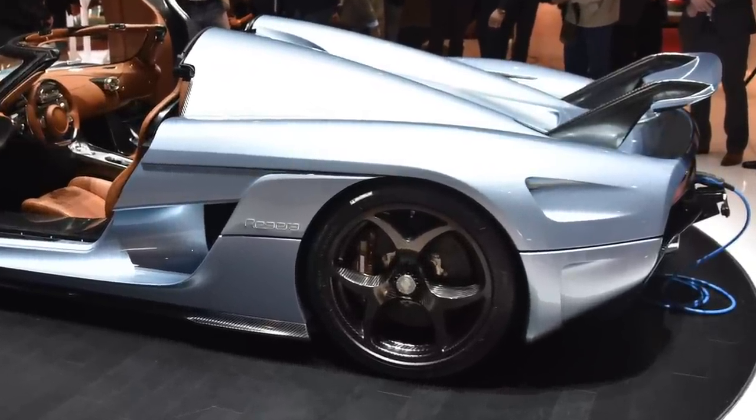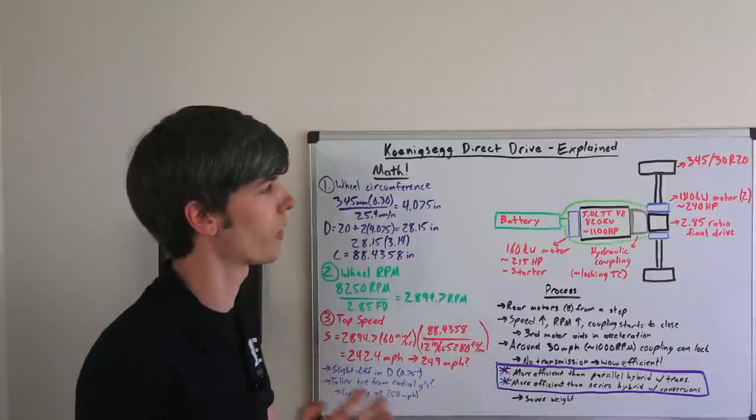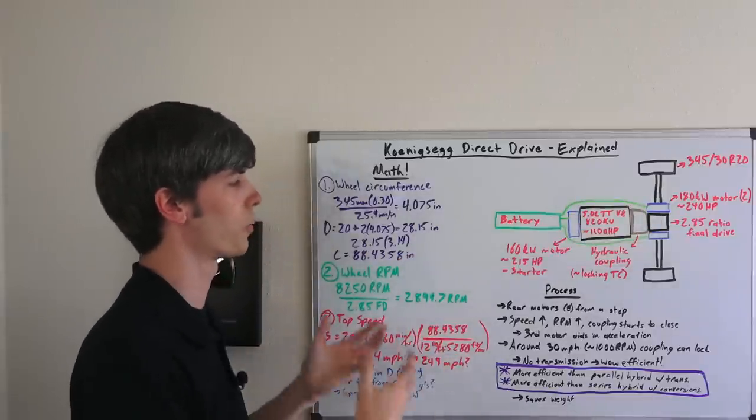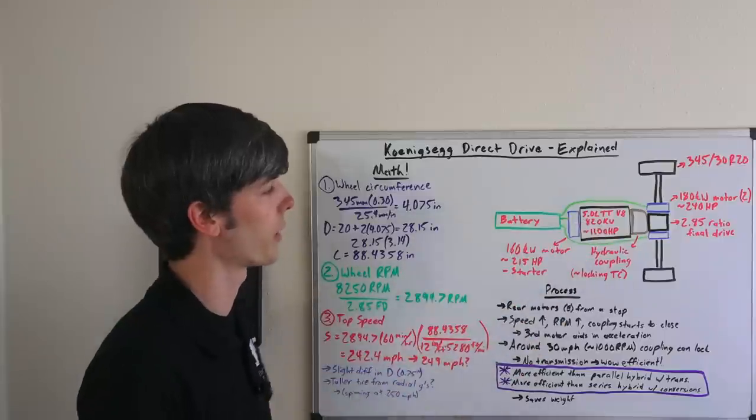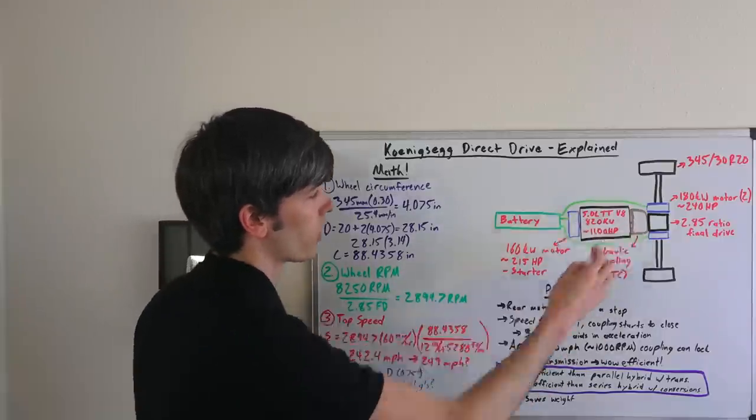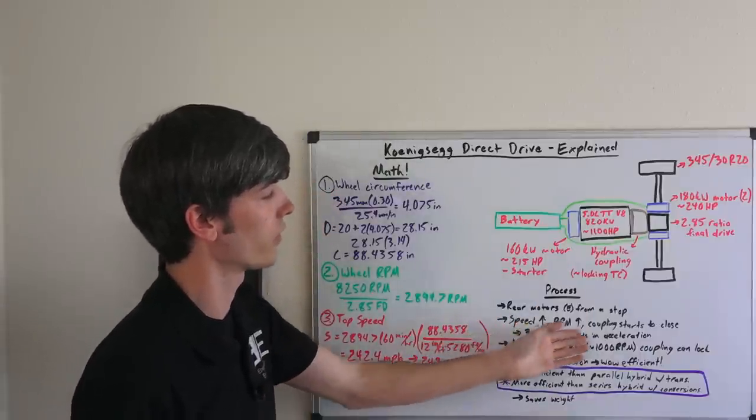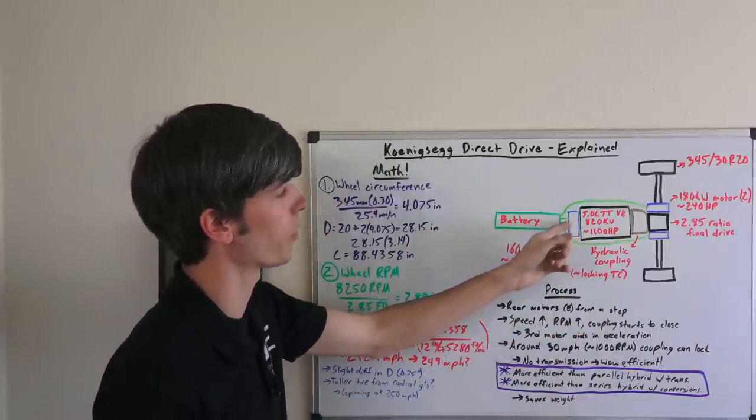So what is the process? How does this work? Well getting started from a stop, these two rear motors are going to be doing all of the acceleration to get you started. Then as your speed starts to increase, the engine rpm starts to increase and this hydraulic coupling starts to close up. So this third motor is now aiding in acceleration because you're passing some of the torque from this motor through that hydraulic coupling to the rear wheels.